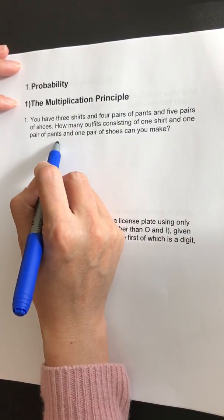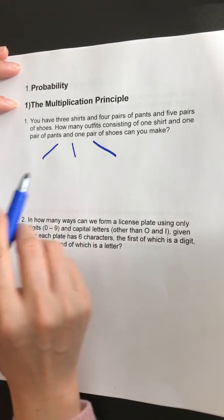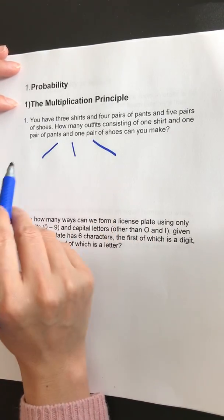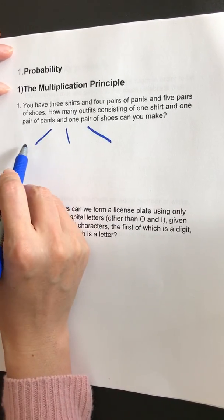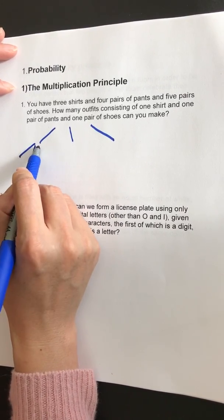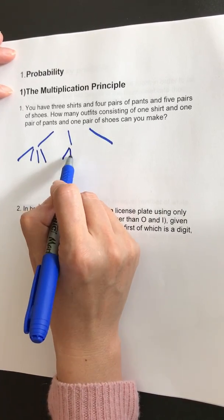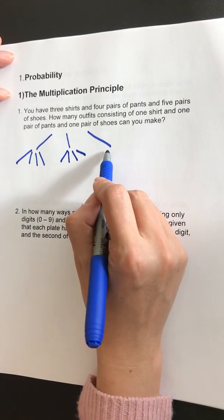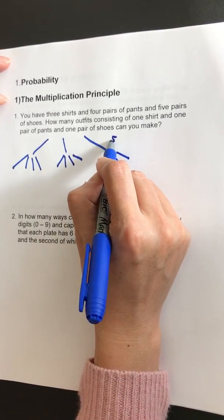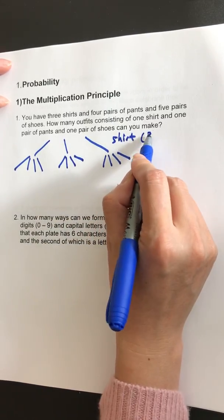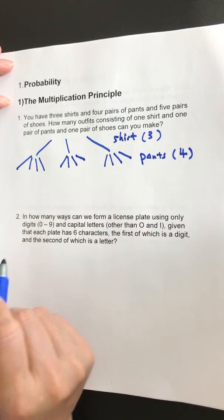So you have three shirts, one, two, three, four pairs of pants. For each shirt, you can have a choice of four pants. One, two, three, four. Okay, this is shirt. You got three. This is pants. You got four.